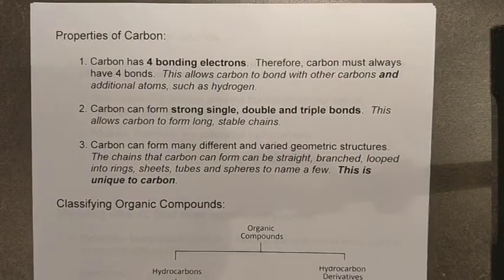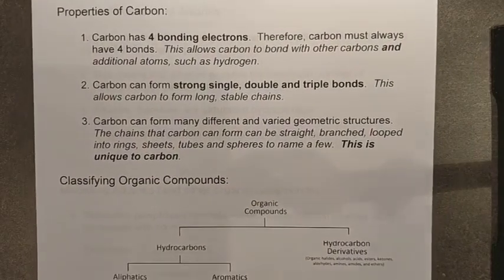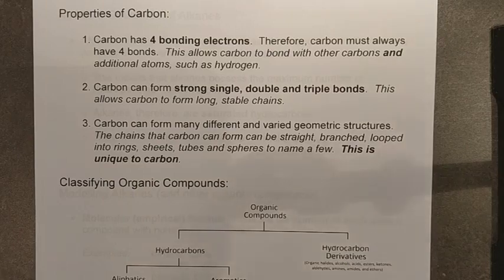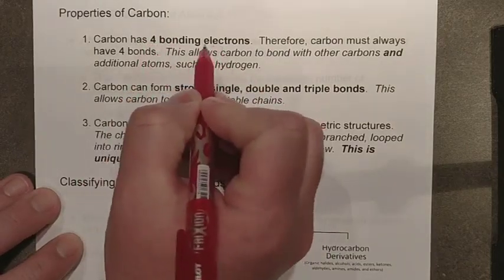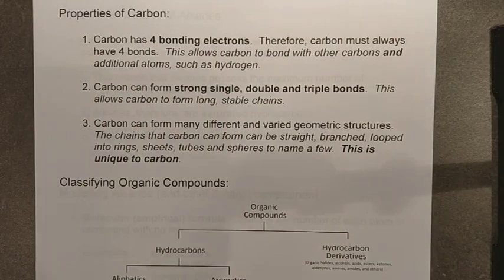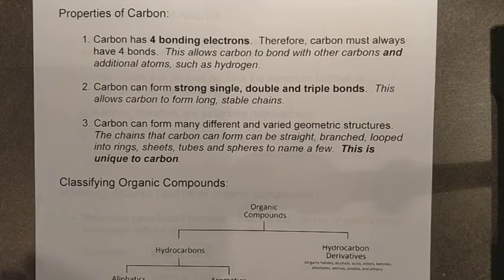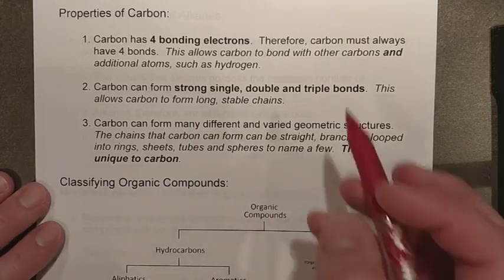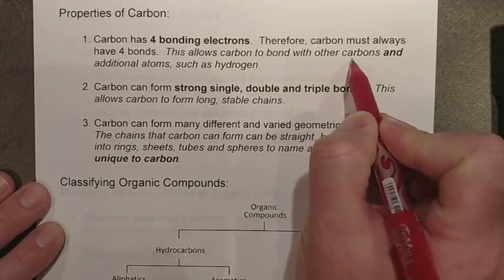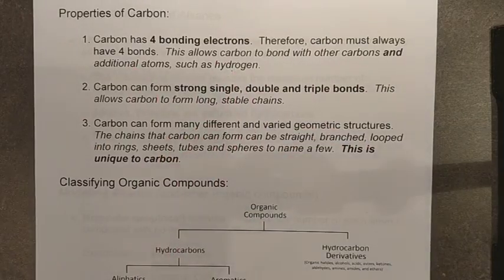Here's what makes carbon so unique. Carbon has one of the highest bonding capacities of anything on the periodic table. Carbon has four valence electrons in its most normal atomic state, and therefore must form four bonds to fill its valence. This is a hard and fast rule — carbon must always facilitate a full octet and therefore have four bonds. This allows carbon to form bonds with other nearby carbons and additional atoms like hydrogen.